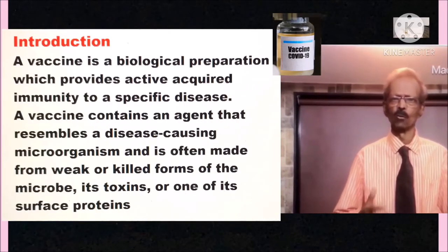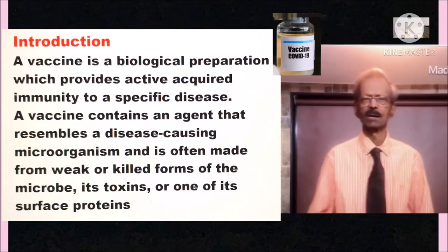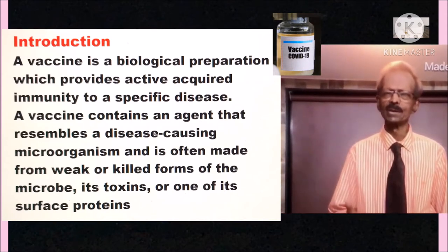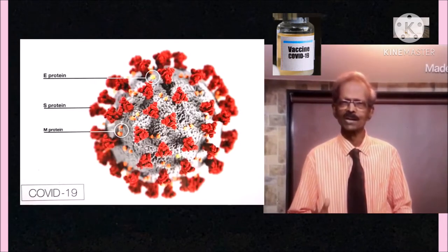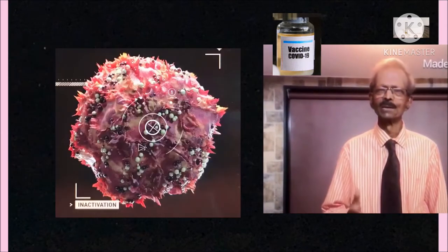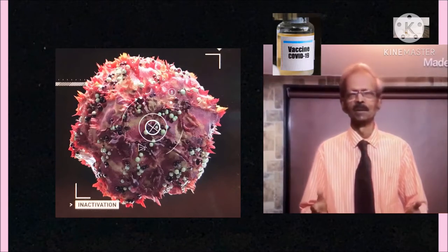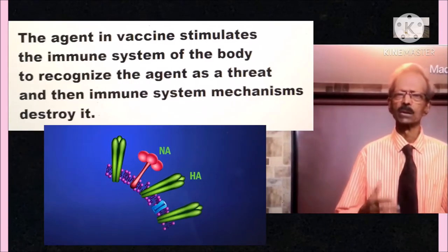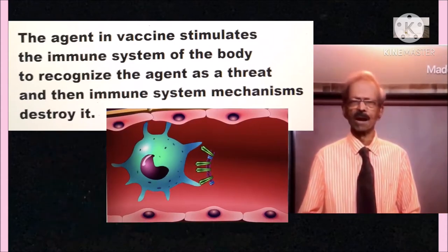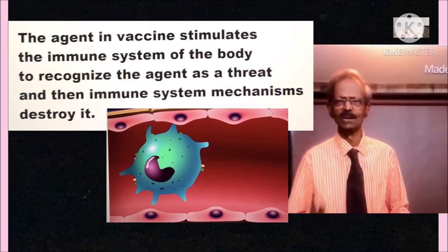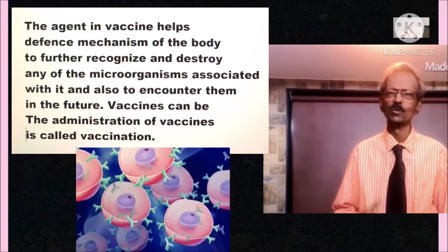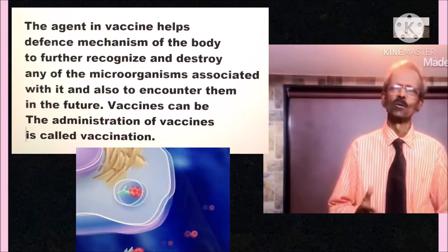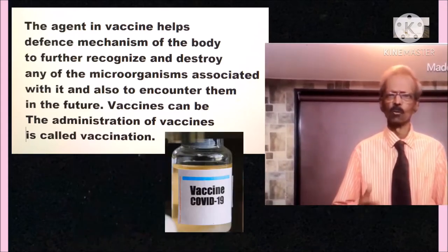A vaccine is a biological preparation which provides active acquired immunity to a specific disease. A vaccine contains components that resemble a disease-causing microorganism and is often made from a weak or killed form of the microbe, its toxins, or one of its surface proteins. The agent stimulates the immune system to recognize the agent as a threat and destroy it. Vaccines help the body further recognize and destroy associated microorganisms encountered in the future. Vaccines can be prophylactic or therapeutic.